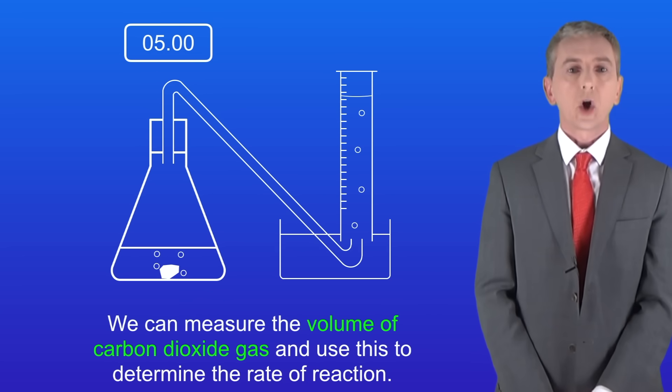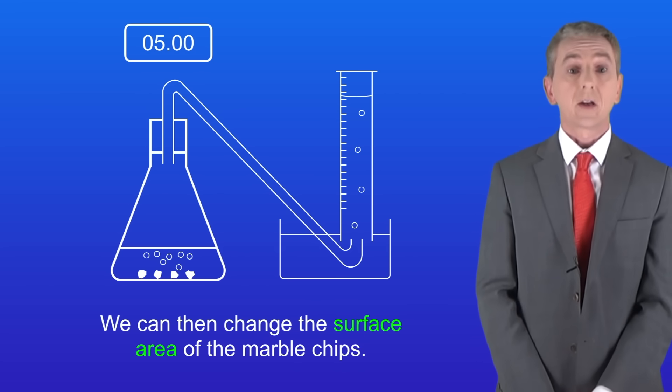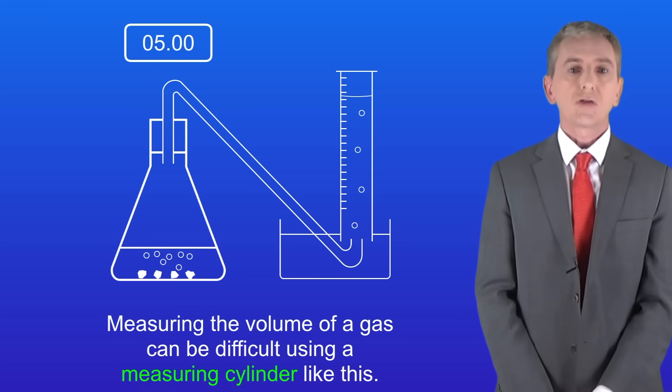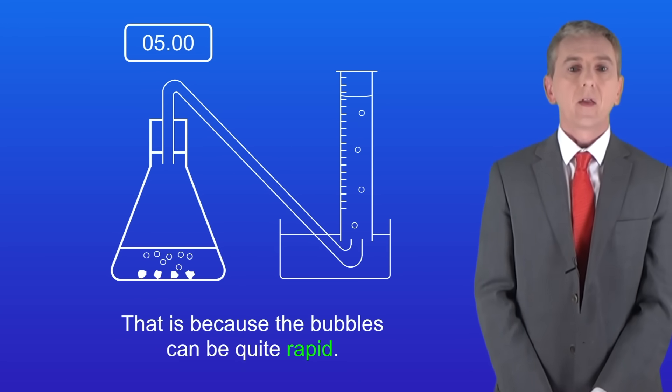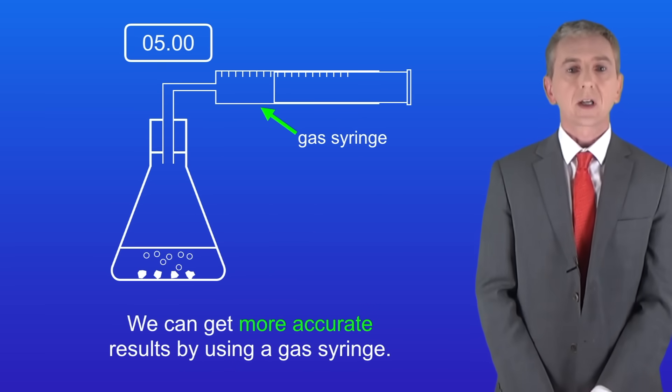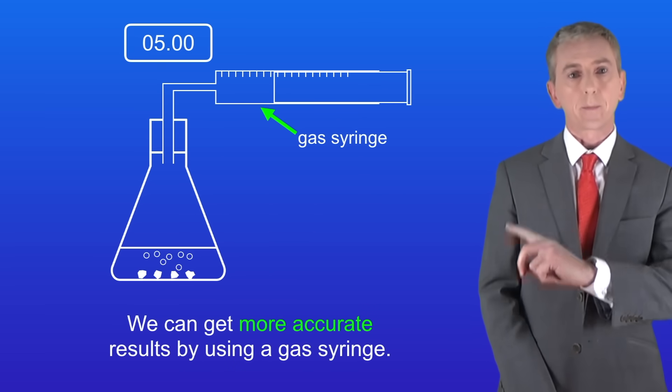We can measure the volume of carbon dioxide gas and then use this to determine the rate of reaction. We can then change the surface area of the marble chips. Now measuring the volume of a gas can be difficult using a measuring cylinder like this. That's because the bubbles can be quite rapid. We can get more accurate results by using a gas syringe like this one.